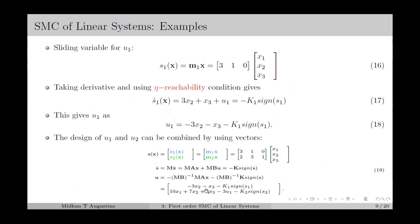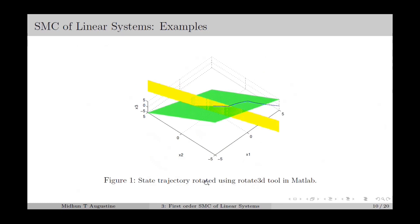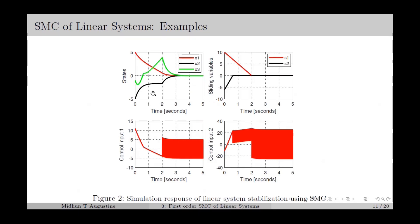We can simulate the system using this control law. Figure 1 shows the state trajectory, where the system starts from an initial state and moves towards the origin. The two sliding surfaces are shown in green and yellow color, and we can see they are planes. Initially the state starts from this point and moves towards the sliding surface corresponding to S₂ (shown in green). Once it hits that sliding surface it moves towards the origin, where it hits the second sliding surface for S₁ (shown in yellow), and after that moves towards the origin through the intersection of both sliding surfaces. Figure 2 shows the response: the states converge to origin, the sliding variables converge to zero, and the control inputs start switching once the sliding variable S becomes zero.